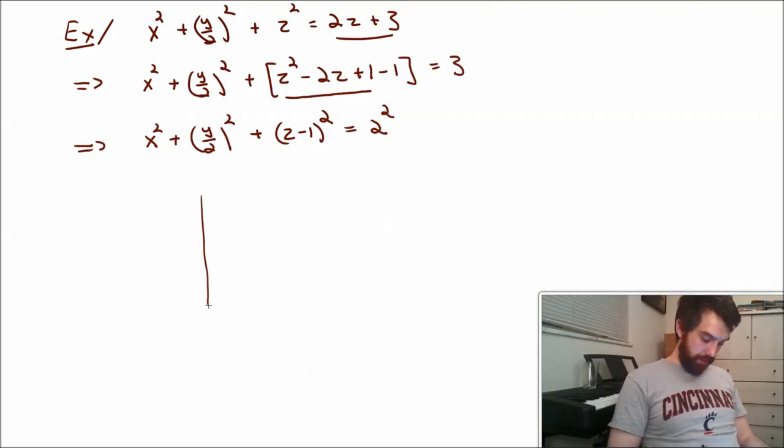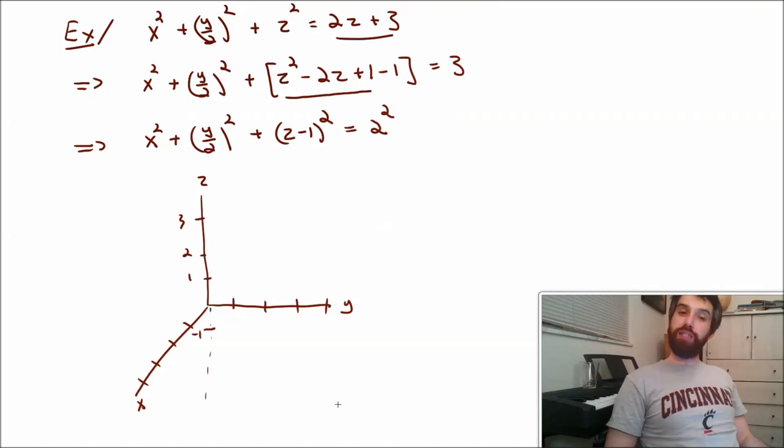So how do I go and try to plot this? So this is again my x, my y, my z. I'm going to put a few points down here. Here's 1, 2, 3. If I go along, down here is going to be a minus 1. On the y, I'm going to have a 1, 2, 3, 4. On the x, a 1, 2, 3, 4. And so on.